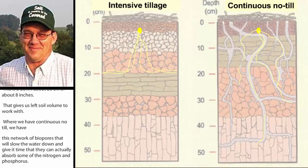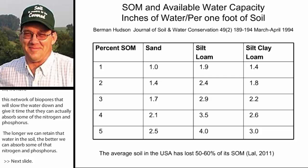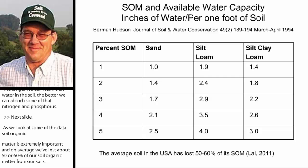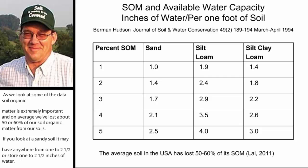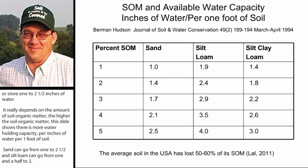Soil organic matter is extremely important. On average, we've lost about 50 to 60 percent of our soil organic matter. A sandy soil may store one to two and a half inches of water, but it really depends on the amount of organic matter. This slide shows that as soil organic matter increases, water-holding capacity per foot of soil increases significantly: sand goes from one to two and a half inches, silt loam from almost two to four, and silty clay loam from 1.4 to three inches of water. As you increase soil organic matter, you can store more water and have more chance to treat it.